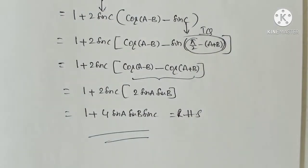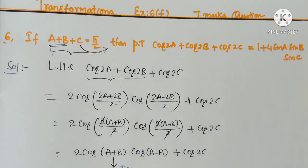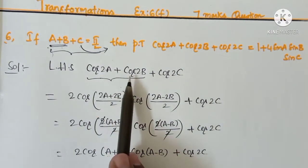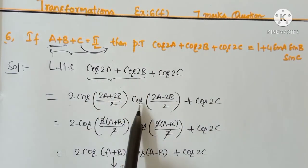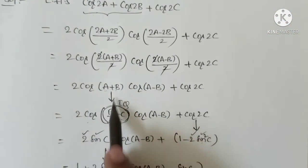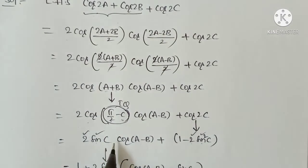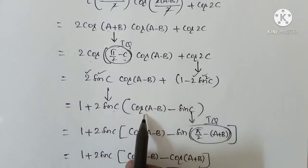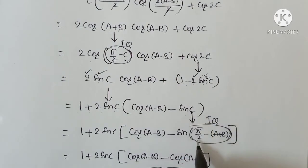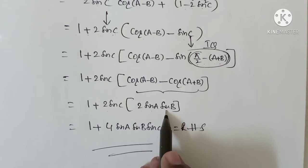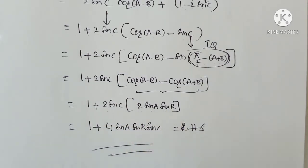LHS equals RHS. To summarize: we took LHS Cos 2A plus Cos 2B plus Cos 2C, applied the sum-to-product formula, replaced A plus B by Pi/2 minus C so that cos converted to sin, used Cos 2C equals 1 minus 2 Sin squared C, took 2 Sin C common, replaced Sin C by Cos(A plus B), and used Cos(A minus B) minus Cos(A plus B) equals 2 Sin A Sin B, giving 1 plus 4 Sin A Sin B Sin C.